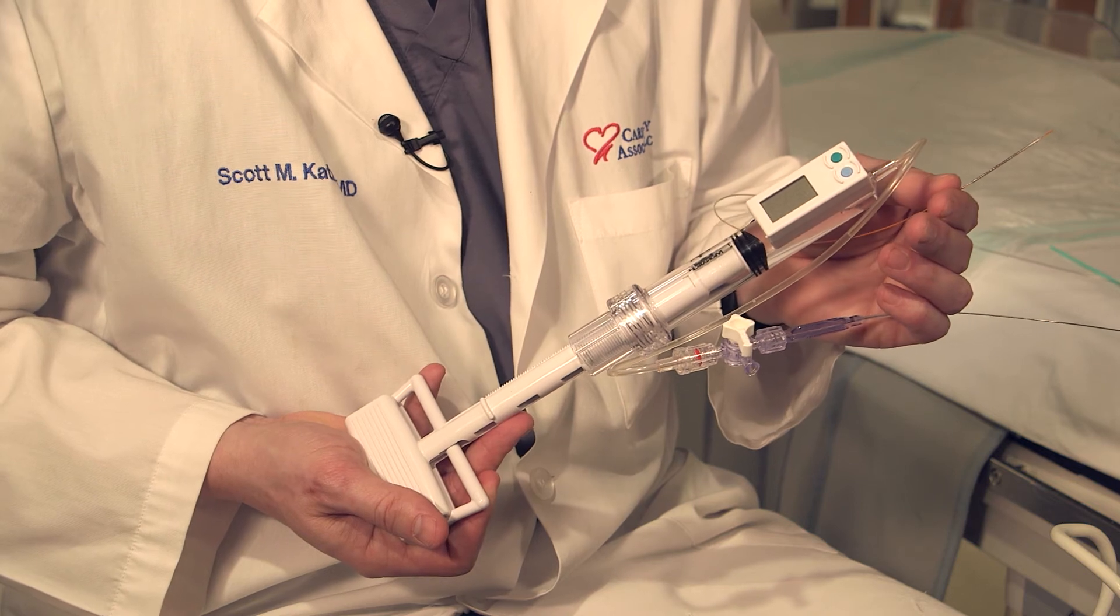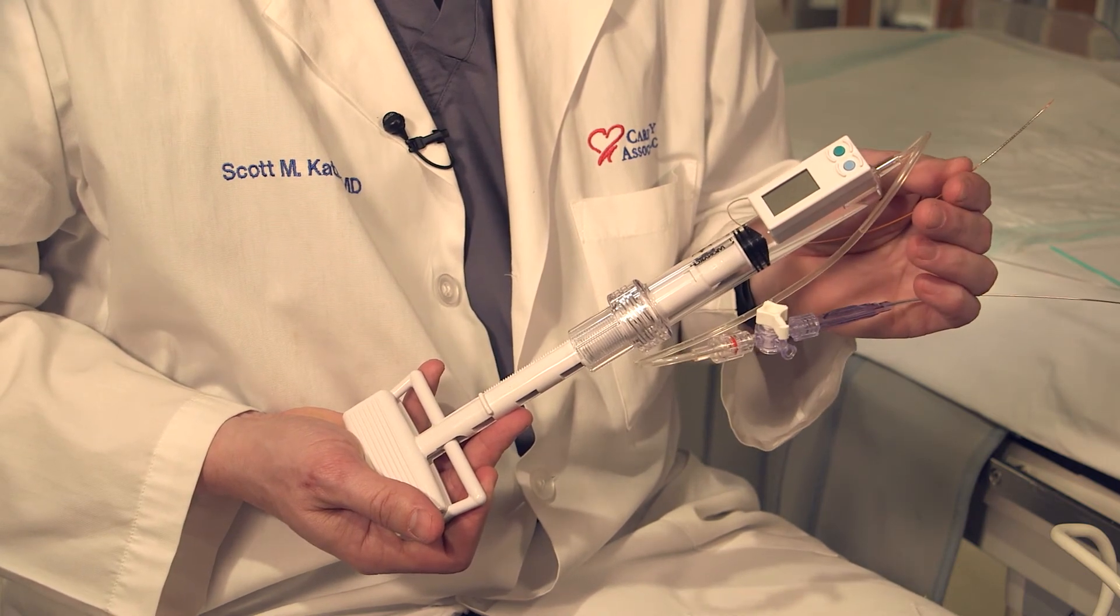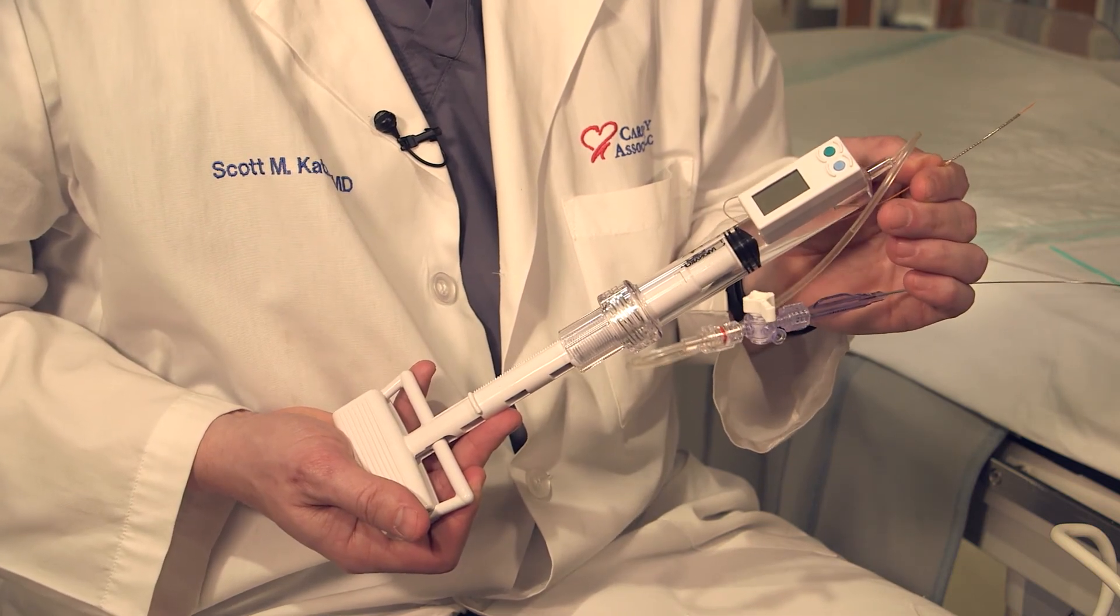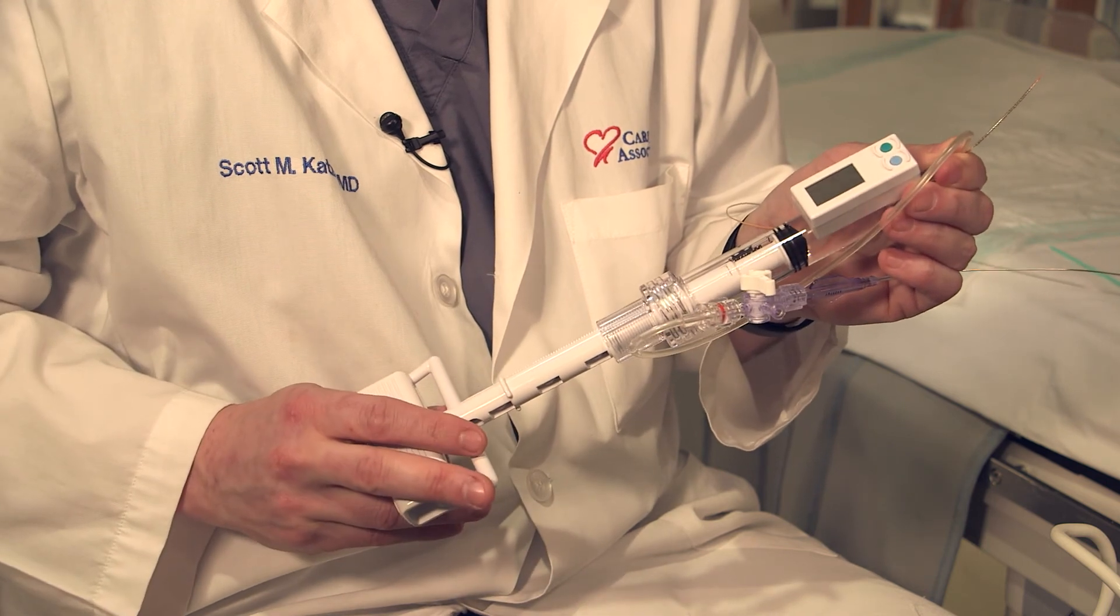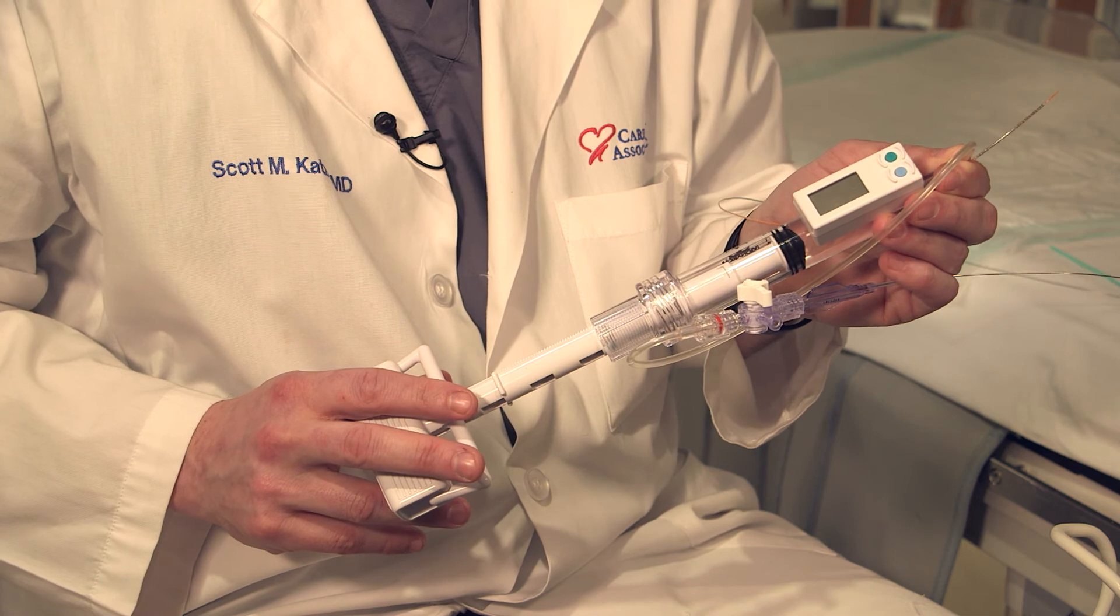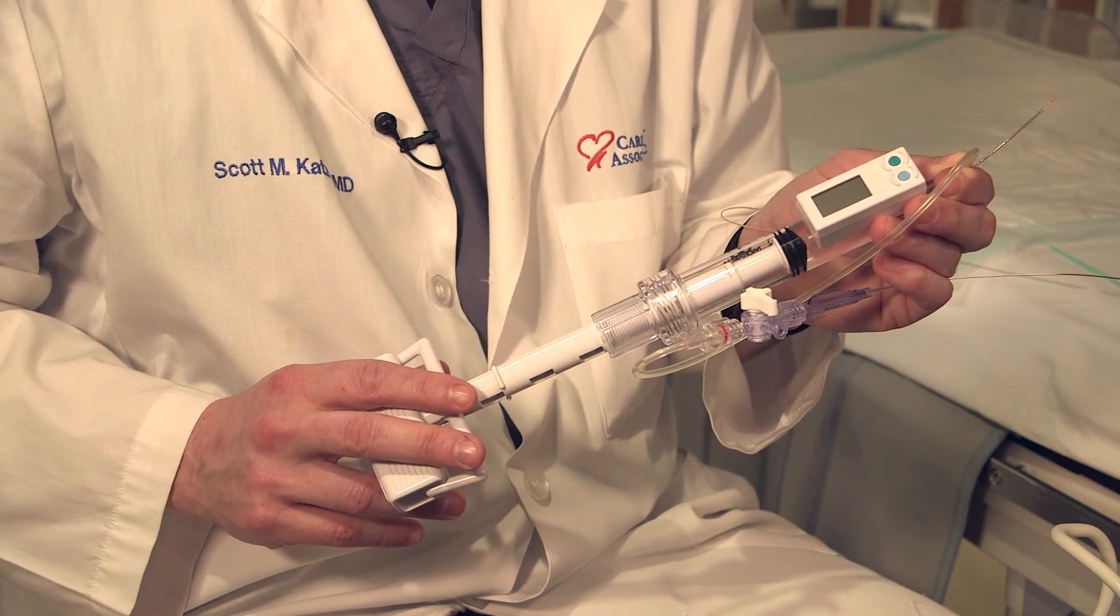This device is one of our balloon inflators. Basically, this gets hooked onto the end of the stent balloon, and we are able to twist this and inflate the balloon to whatever pressure we would like. That's how we expand the stents and place them into the blocked artery to relieve that obstruction.